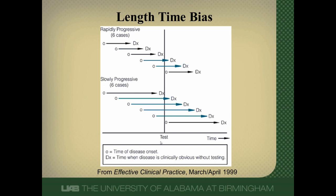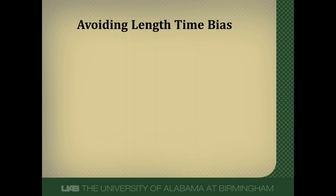If we look at this graphically, here's a point in time where we do a screening test, say age 50 in someone. There's a group of slowly progressing tumors and a group of rapidly progressing tumors. If we do our screening test at this one point in time, you can see we'll pick up four of the slowly progressing tumors, but only two of the rapidly progressing tumors. So this is the concept of length-time bias — you pick up much more slowly progressive tumors that have a better prognosis no matter what.